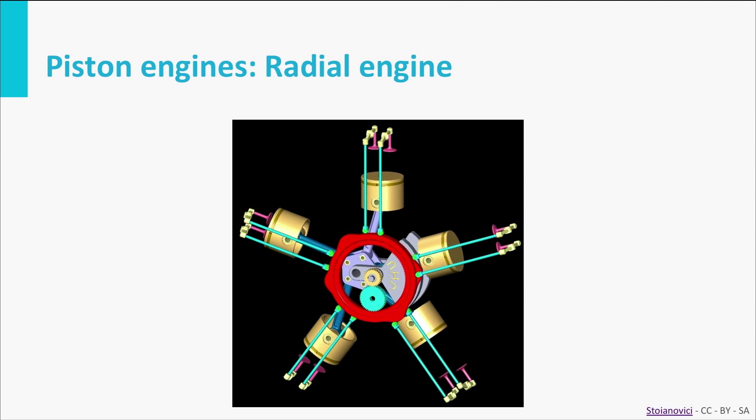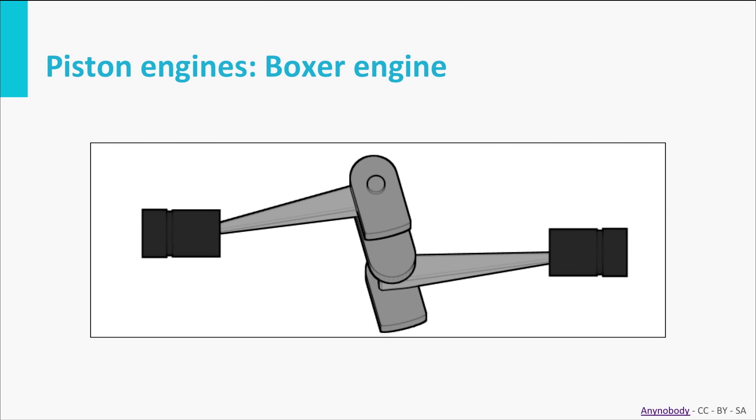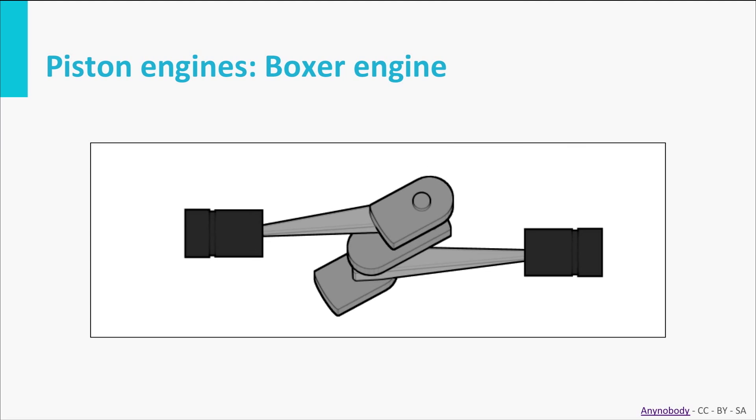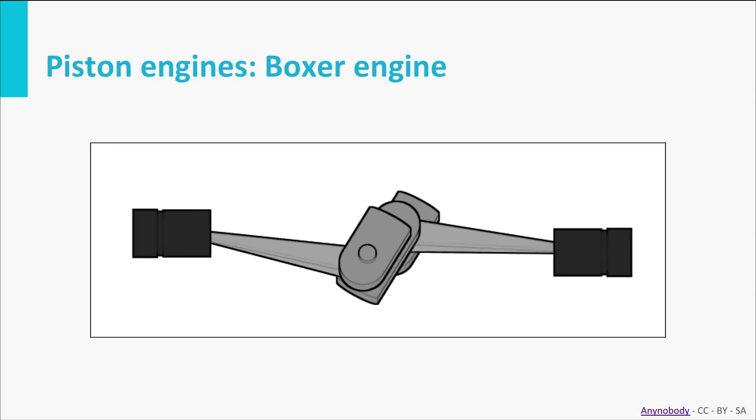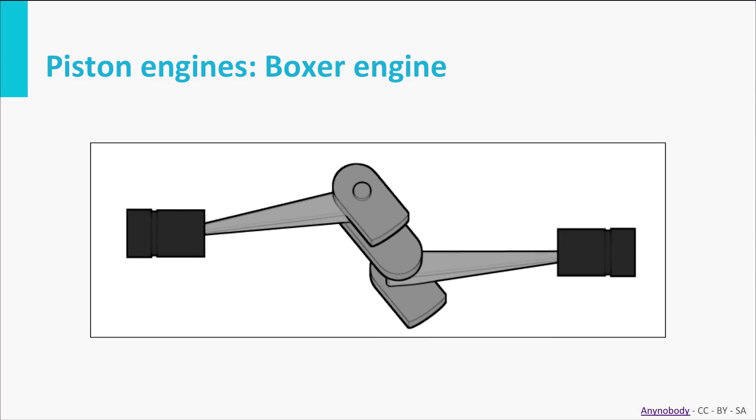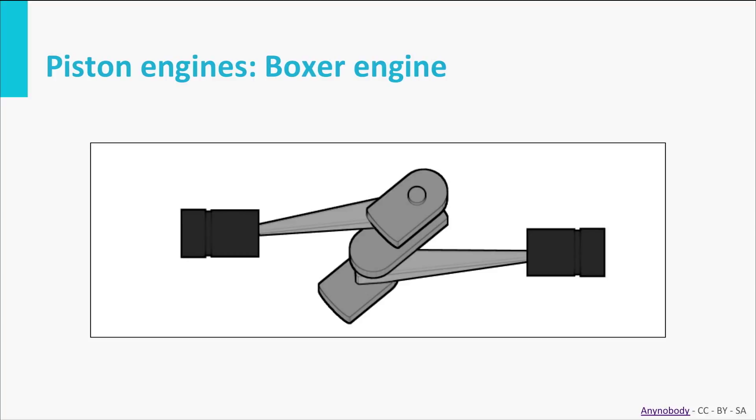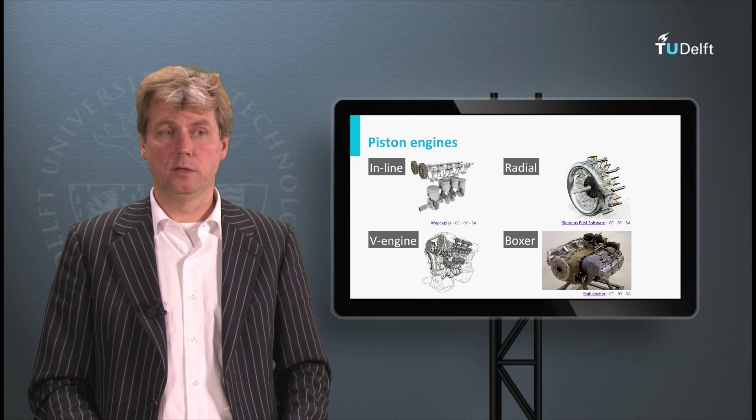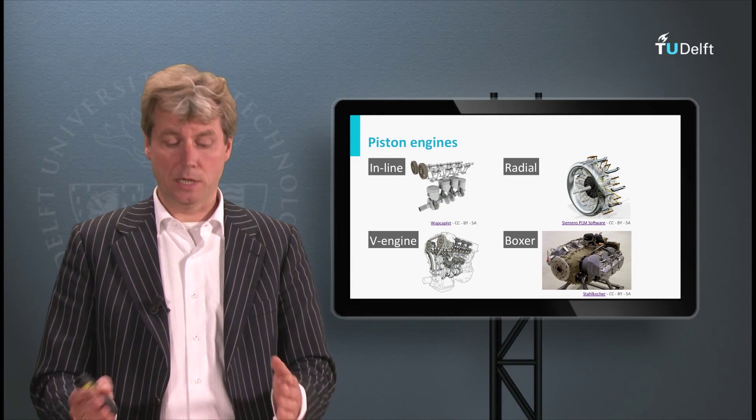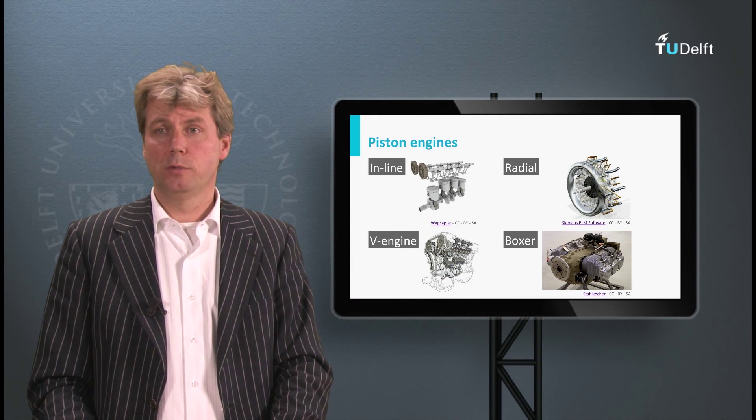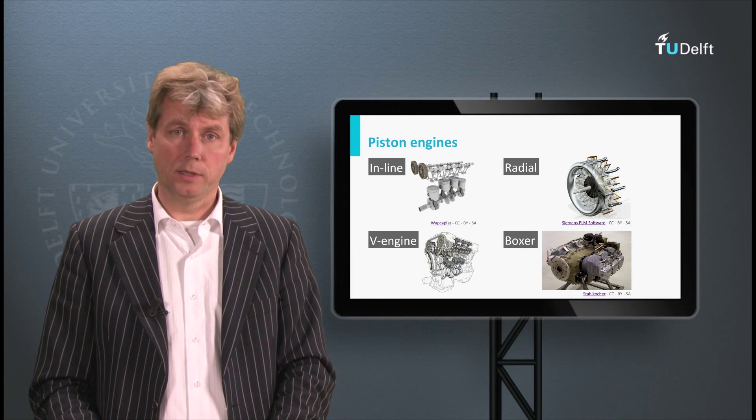A variation on the inline engine is what's called the boxer engine, in which two cylinders are put on opposite sides and in this way create an arrangement similar to the inline engines. It's also possible to put them in a different configuration, for instance the V engine which is similar to a boxer engine but has them both slightly up, both sides of the cylinders, and you see here the inline radial boxer engine also indicated.